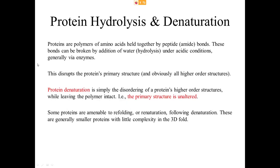Now let's look at what we can do to proteins chemically. We can do two main types of chemistry. First: denaturation — completely unfolding them, disordering all the structure. However the structure was put together, whether globular, straight, inside-out or otherwise, we completely unfold it into just a long floppy filament of amino acids. That's what protein denaturation means.